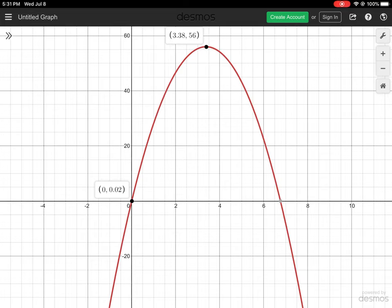It doesn't go higher than our coordinate point here, which is 3.38 and 56. The 3.38 is the time because the horizontal axis is time and the vertical axis is height. So the maximum height this reaches is 56, whatever the unit is—meters or feet—in 3.38 seconds. When does the ball come back down to earth? The equation tells us it's at 6.7761 seconds when the ball returns to zero.